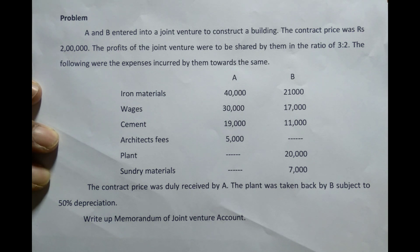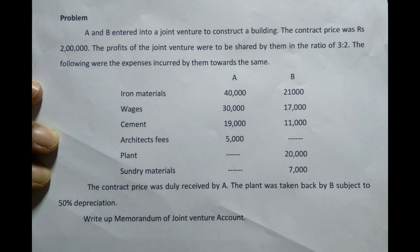A and B entered into a joint venture to construct a building. The contract price was Rs. 2 lakh. The profits of the joint venture were to be shared by them in the ratio of 3 to 2. The following were the expenses incurred by them towards the same.